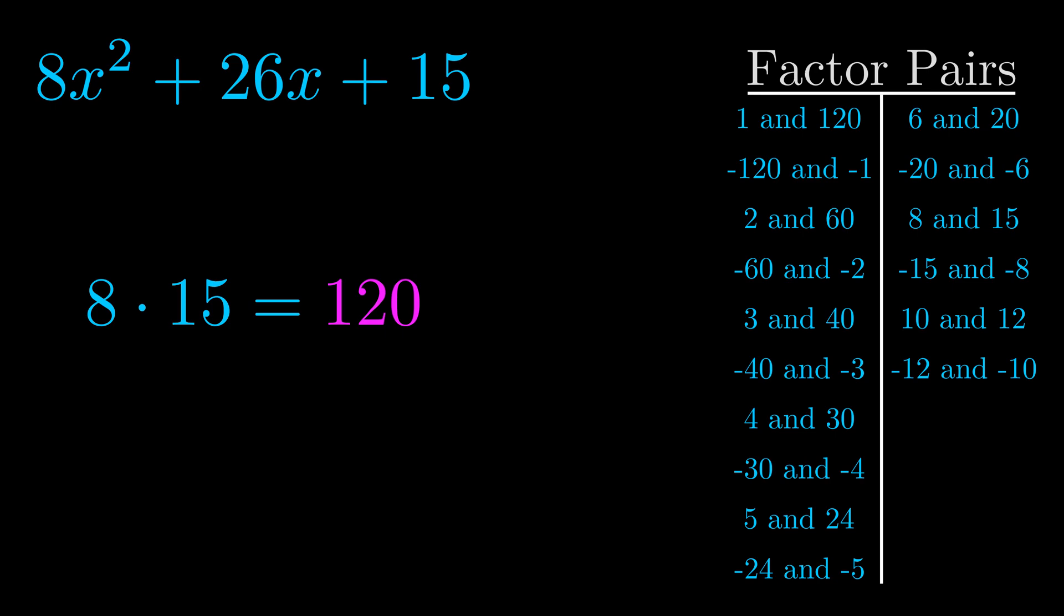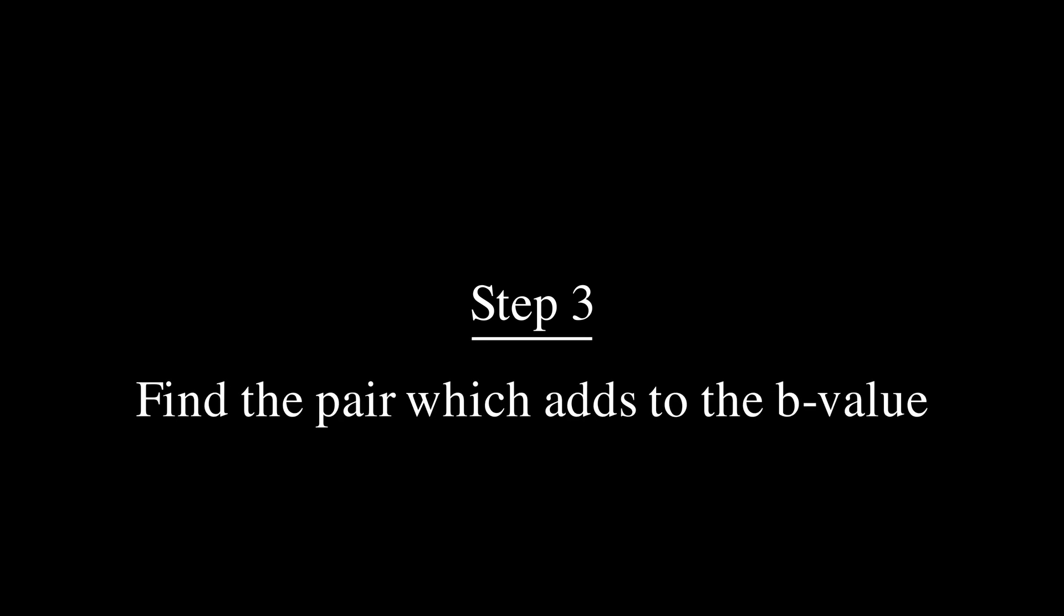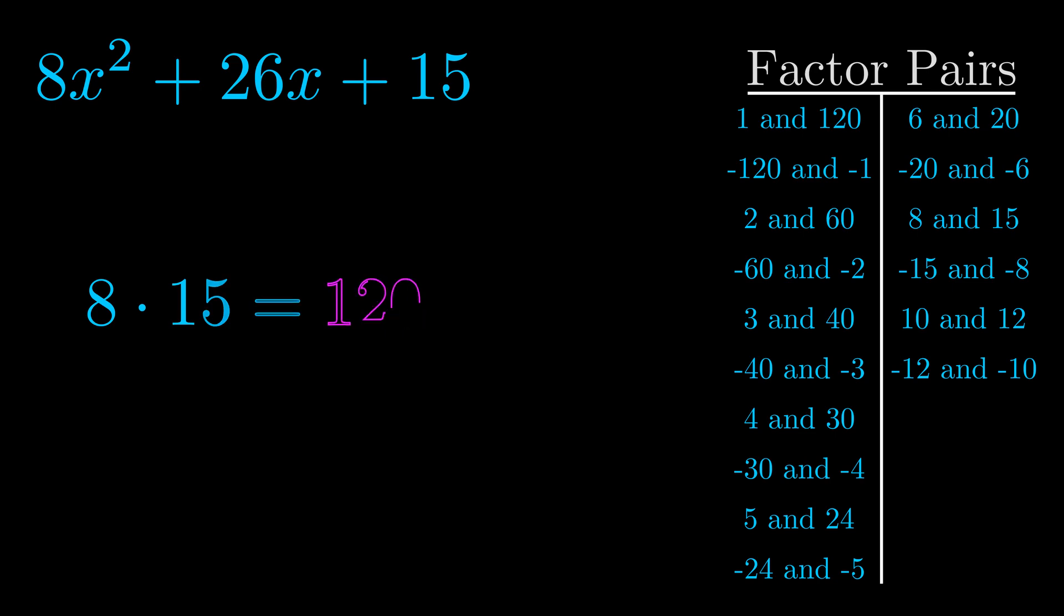Now once you have these factor pairs, the goal is to find which of these pairs adds to the b value. The b value is the coefficient on the x term. That's the middle term, the one that we haven't done anything with yet. And really this is the only factor pair that we need.